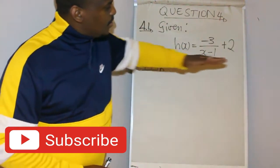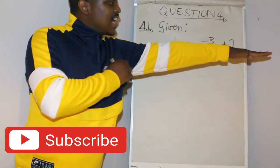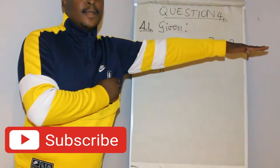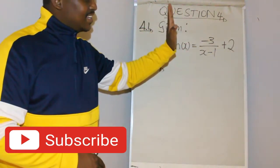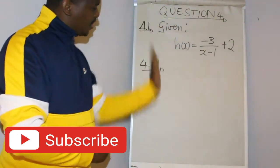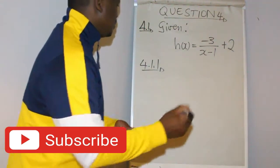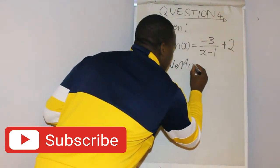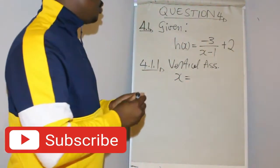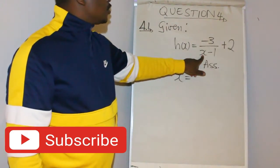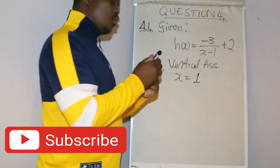The horizontal asymptote runs horizontally, cutting through the y-axis of the Cartesian plane, so it's expressed as y equals a value. The vertical asymptote cuts through the x-axis, so it's expressed as x equals a value. Reading from the function, the vertical asymptote is x is equal to 1.